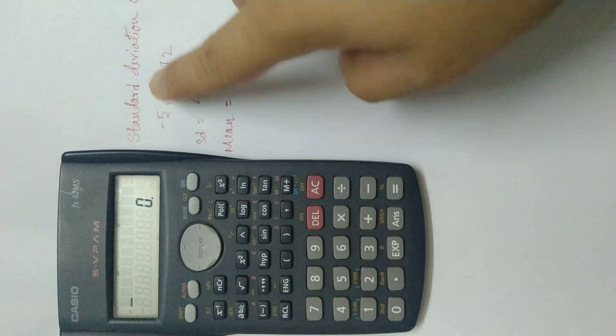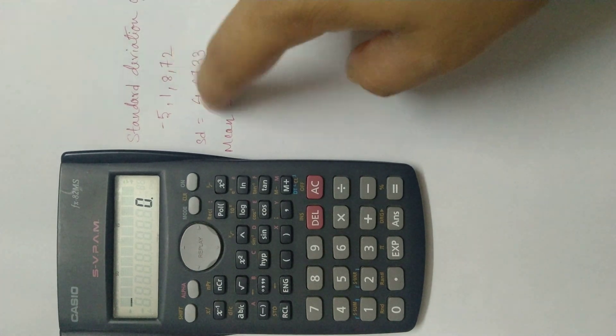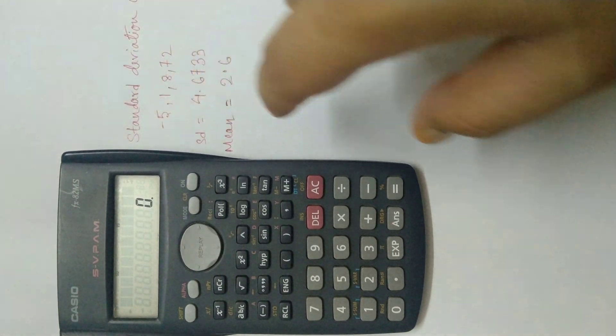Now we have to find the standard deviation of minus 5, 1, 8, 7 and 2. This is 7 and 2, not 72. 7 comma 2.